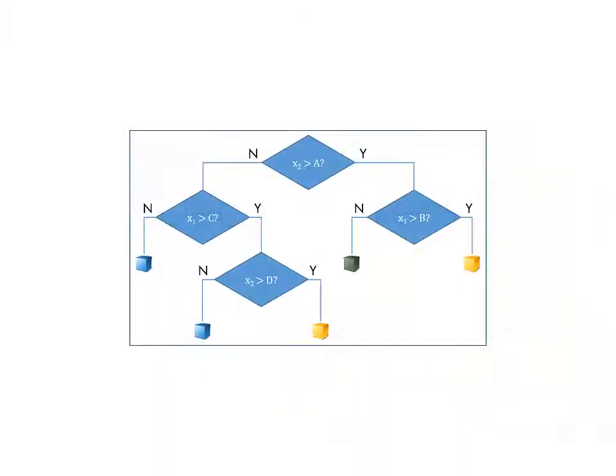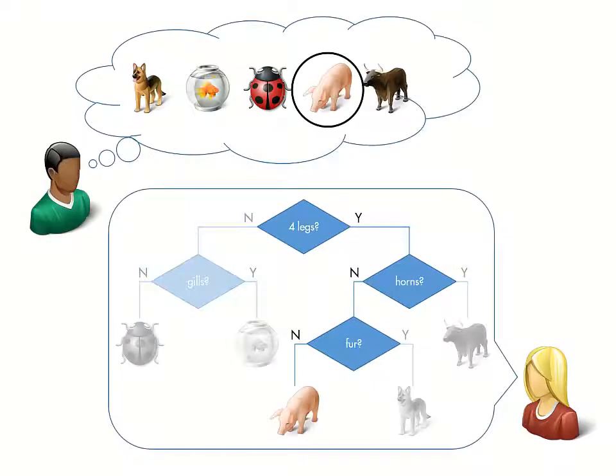Binary decision trees classify observations by creating a sequence of yes-no questions, similar to many common guessing games, where players ask questions to figure out what someone is thinking.